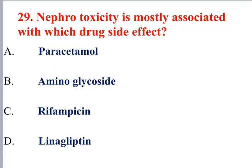Question 29: Nephrotoxicity is mostly associated with which drug? Aminoglycosides are associated with nephrotoxicity. Rifampicin is associated with hepatotoxicity. Paracetamol is also associated with hepatotoxicity and renal toxicity in overdose.